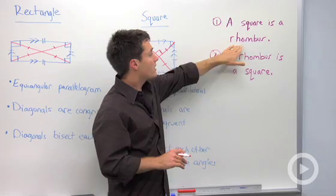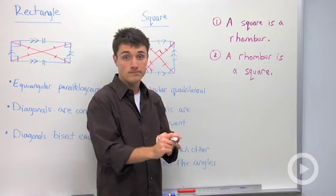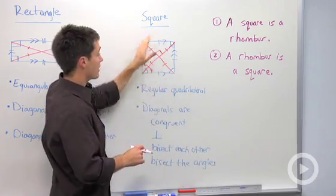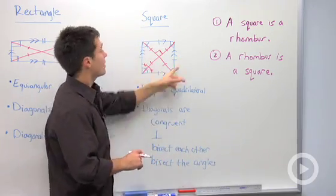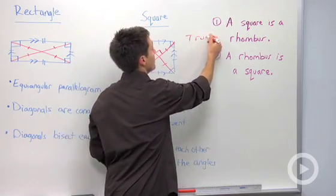If we examine it, the keys to a rhombus are that it's a parallelogram and it's equilateral. So equilateral means all sides are congruent. So if we look at a square, we have two pairs of parallel sides and all sides are congruent. So this one is true.